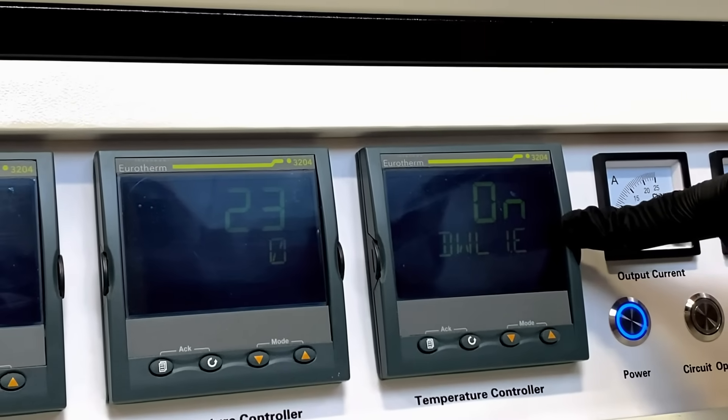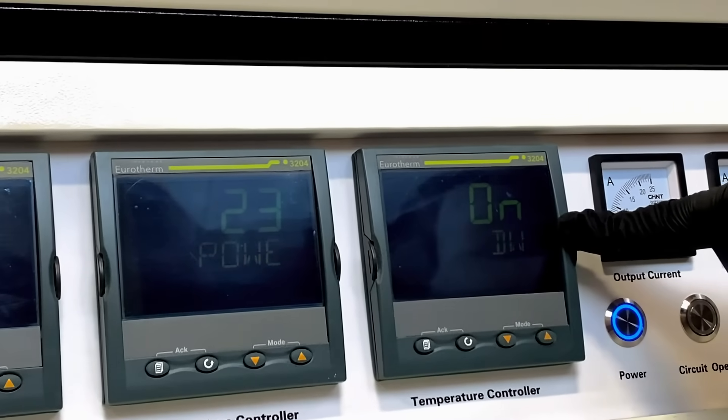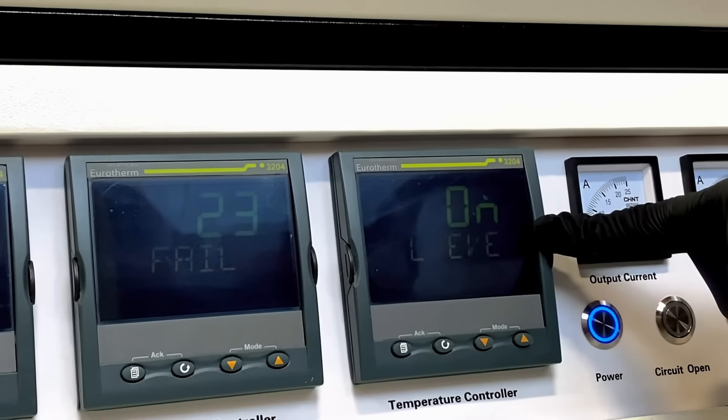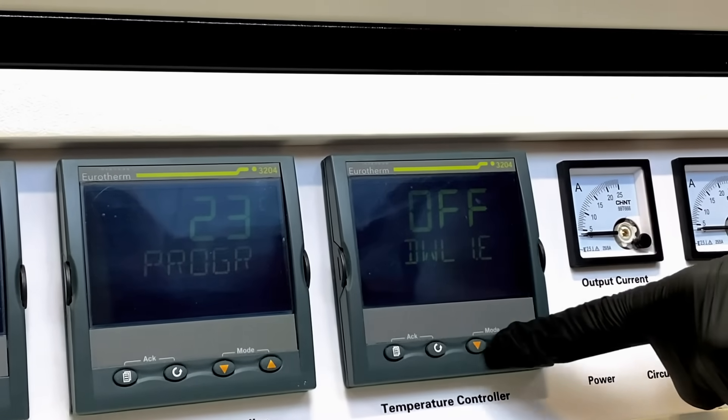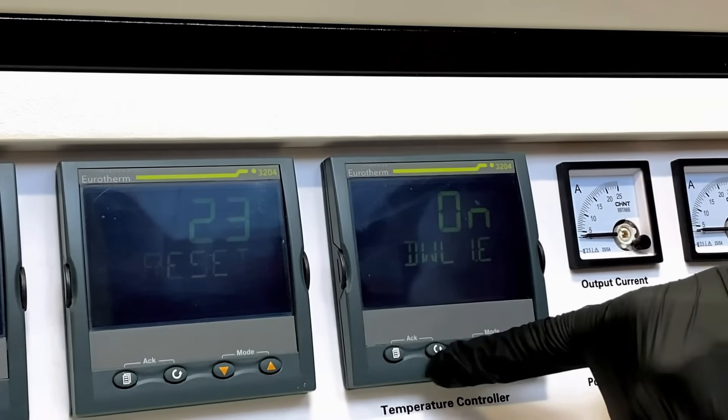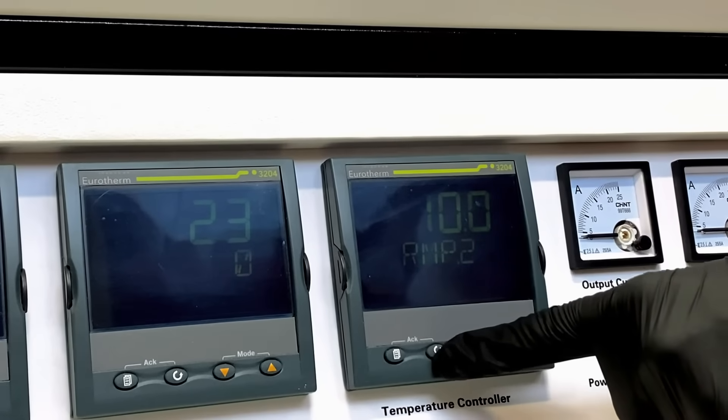This is to turn our dwell cycle on. If we did not want to maintain temperature for the set amount of time during the dwell cycle, we can turn this off. Press the cycle button again to accept.